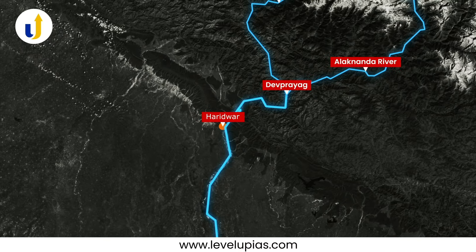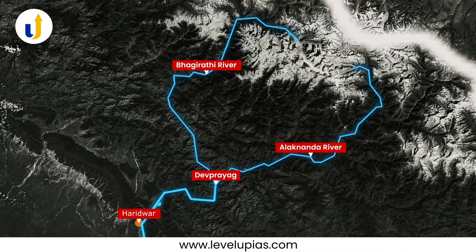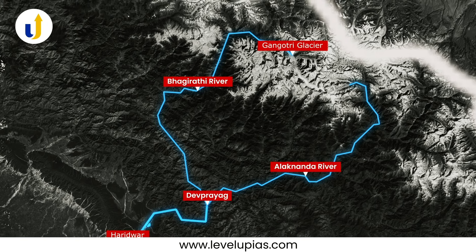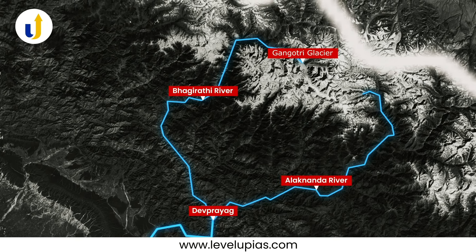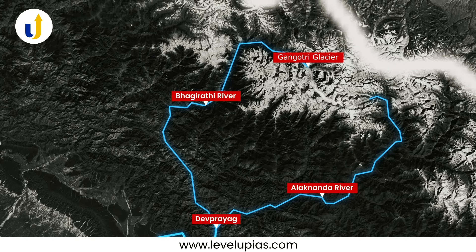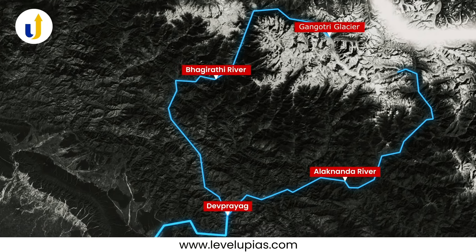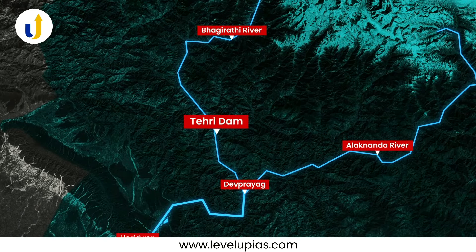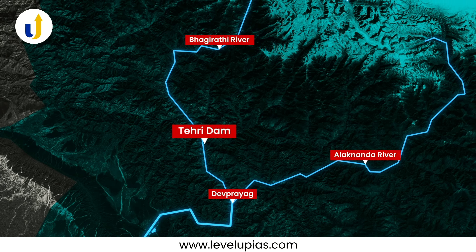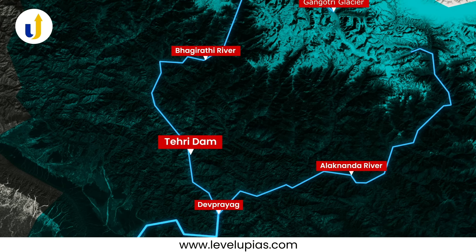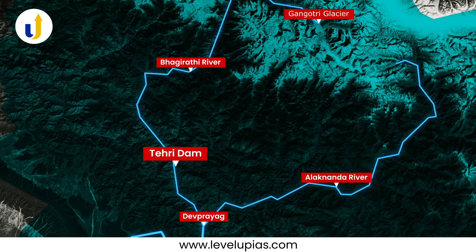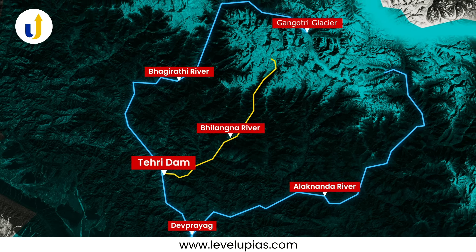The Bhagirathi has its origin from the Gangotri glacier near Gaumukh. The highest dam in India, that is the Tehri Dam, is located on this river downstream of its confluence with Bilangana.